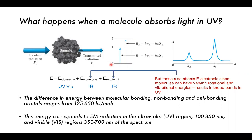Upon absorbance of the correct wavelengths of light, we see excitation from the ground state to an excited state — whether that be the first, second, third, fourth excited state, it just depends. These energy gaps have a certain distance, and that distance is a certain energy. That energy can be related by Planck's relationship to the frequency or wavelength of the light, which means our molecules are likely to absorb only certain wavelengths of light corresponding to those energy level changes.